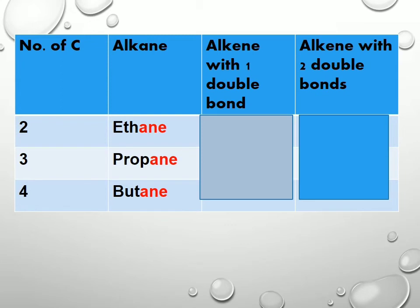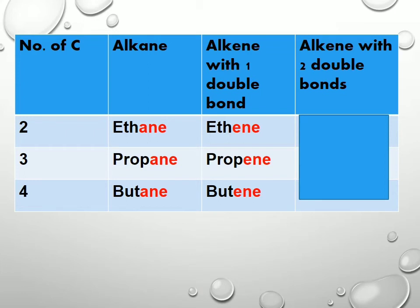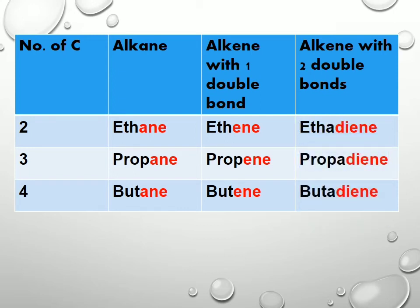For the parent chain names with a carbon-carbon double bond: 2 carbons will be ethene, 3 carbons will be propene, and 4 carbons will be butene. The suffix '-ane' is replaced with '-ene'. For alkenes with 2 double bonds, the compound's parent name ends with '-diene' — so etadiene, propadiene, and butadiene. When there are 2 double bonds, we change '-ene' to '-diene'.